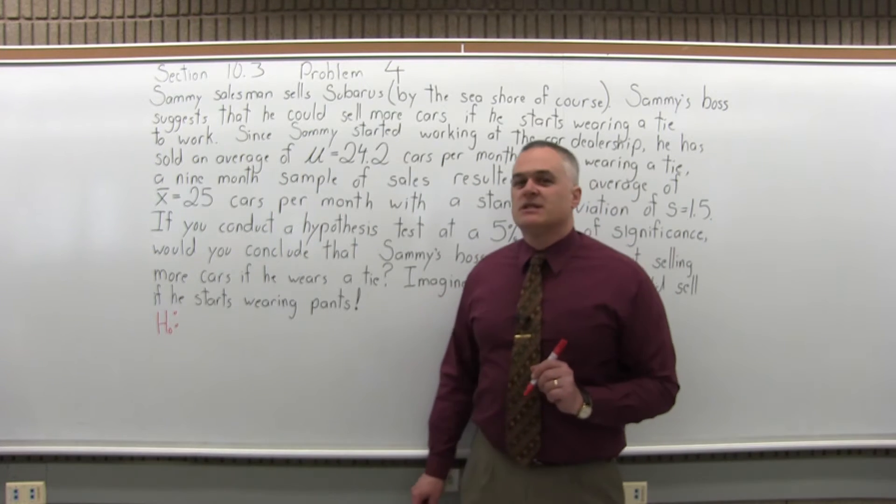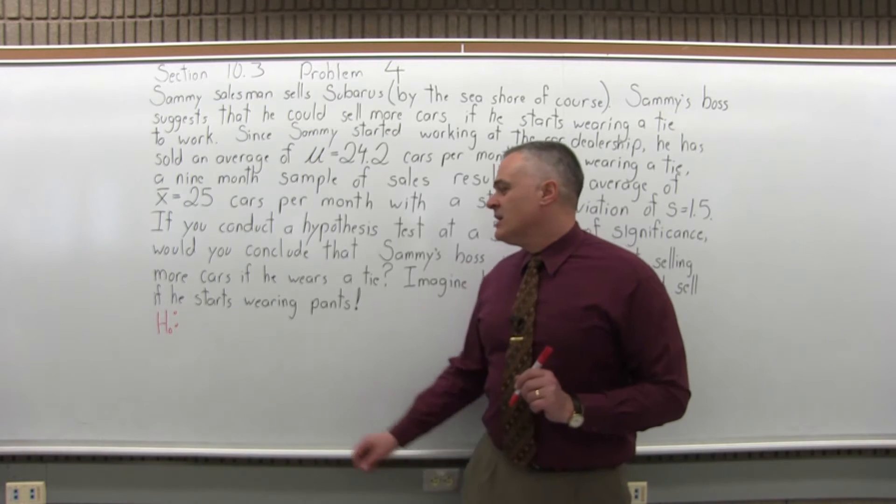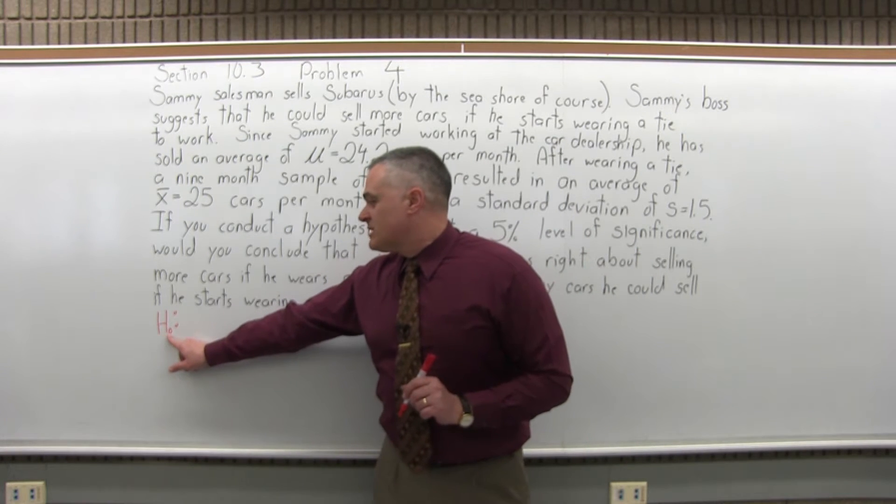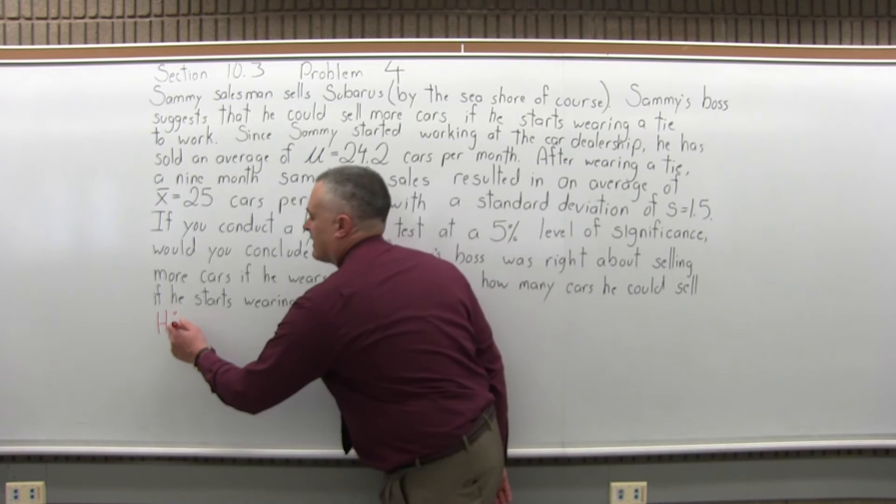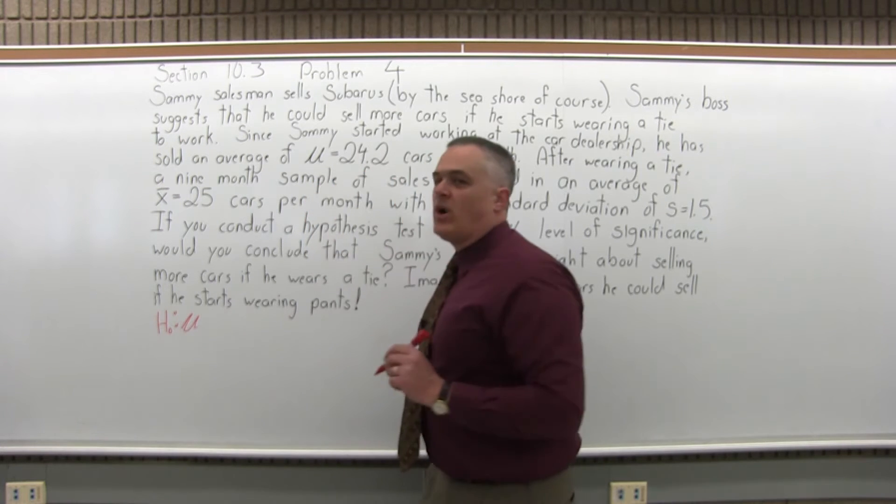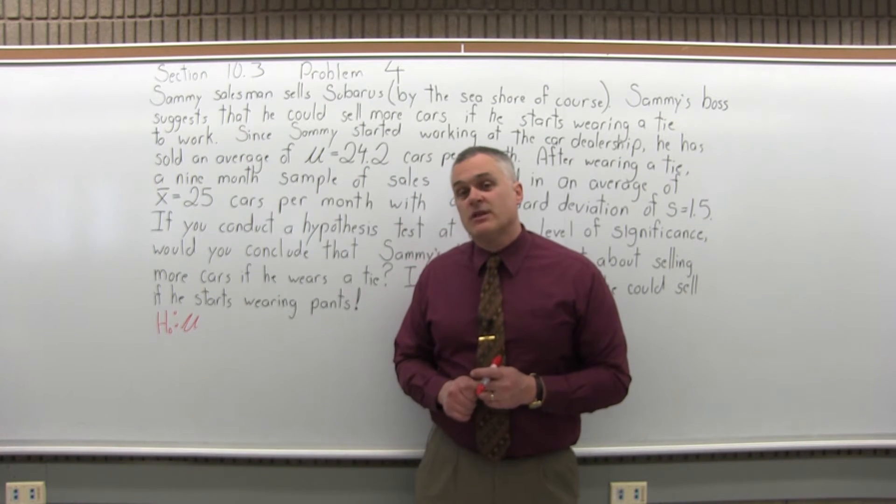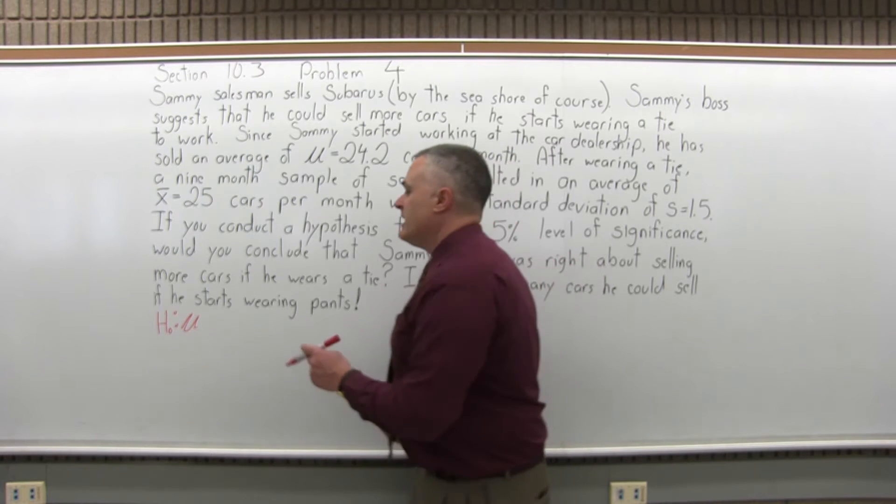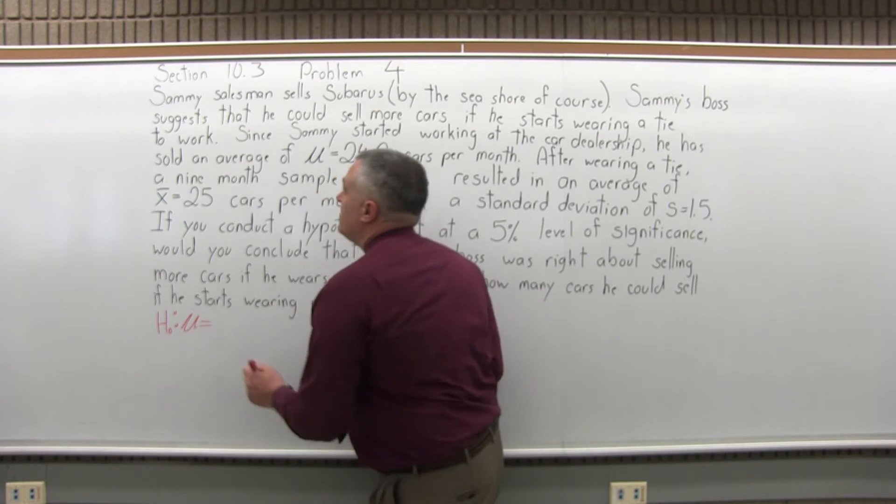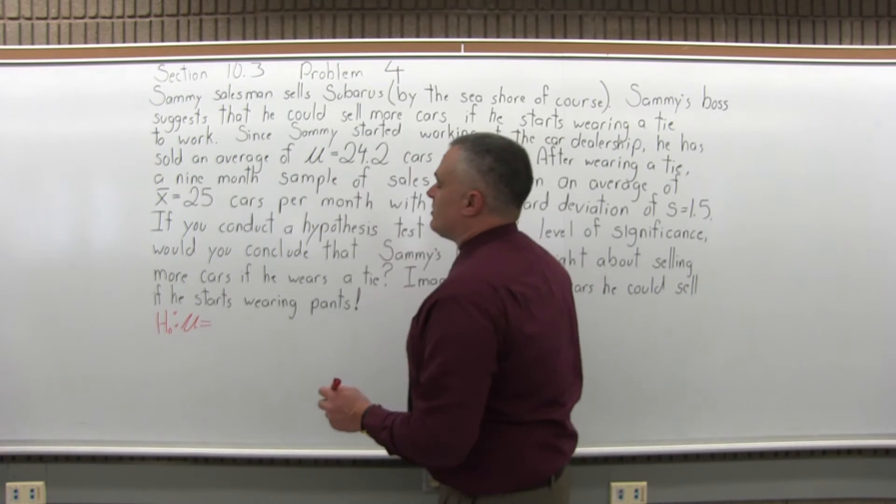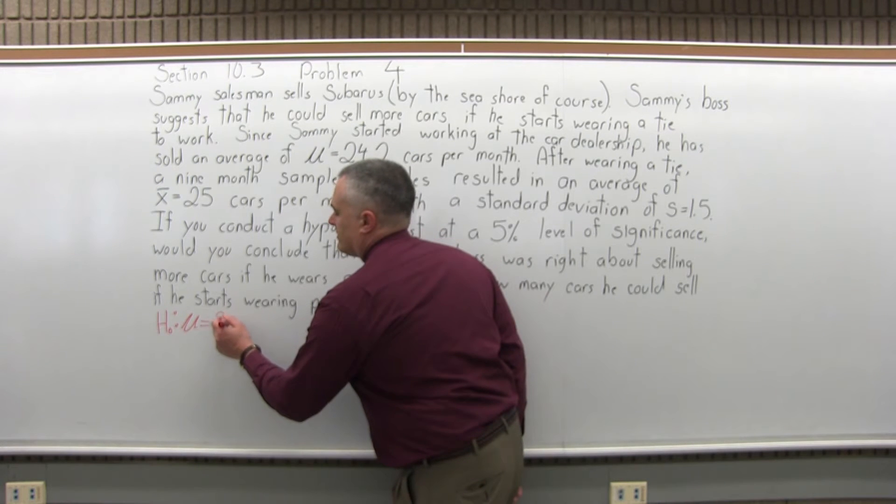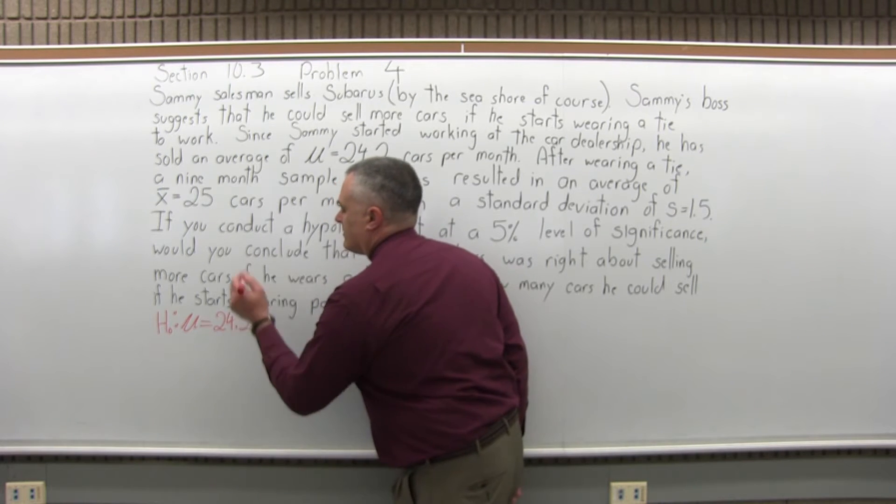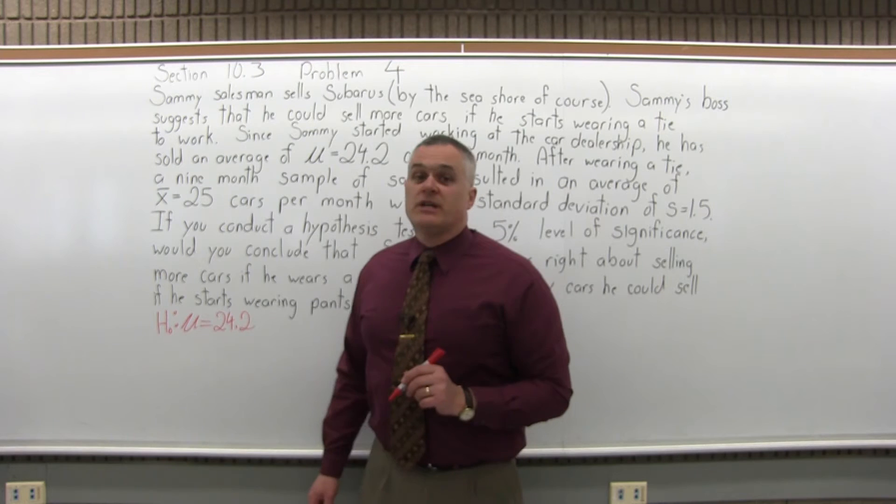Step one of the six is to state the null hypothesis. So the symbol is a capital H with a subscript of zero. We put a colon and we put mu and some condition of equality. It could be an equals, it could be a greater than or equal to or a less than or equal to, and a number. So for this, it's an equal to and it's equal to 24.2. So that's step one.